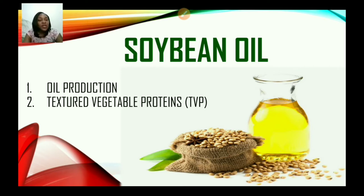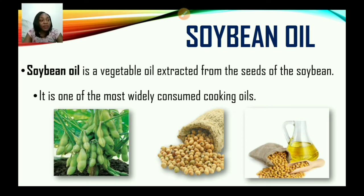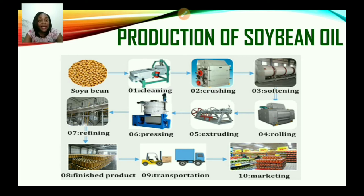Specifically, we're going to look at how soybean is used to produce oil, and we'll also be looking at textured vegetable proteins, or TVP. Soybean oil is a vegetable oil extracted from the seeds of soybean. It is one of the most widely consumed cooking oils. Here you can see what the soybean plant looks like, and afterwards where it is removed from the pod and a picture of what the oil looks like as well.